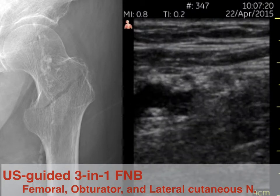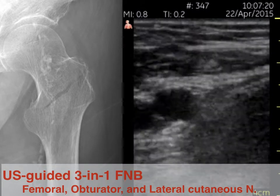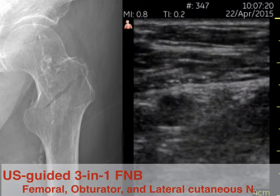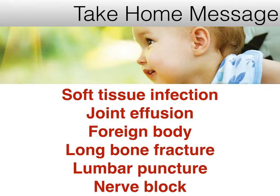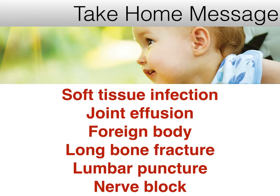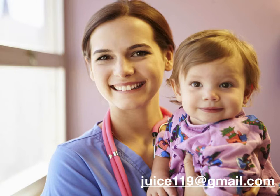Sorry for the rush — I had a little time to deliver a lot of topics. Any questions? For the take-home message and summary: for soft tissue infections, use ultrasound smartly to scan for occult abscess. For joint effusions, find the bone landmark and scan around. For foreign bodies, radiolucent foreign bodies are your target — after familiarizing yourself with the structures, identification becomes easier. For fractures, find cortical disruption, hematoma, and fragment — don't forget to scan in different ways, especially for pediatric patients. For lumbar puncture, identify the spinous processes and space. Thank you.